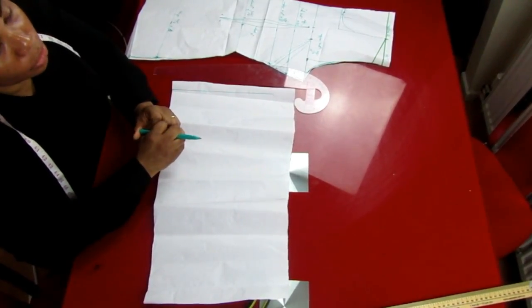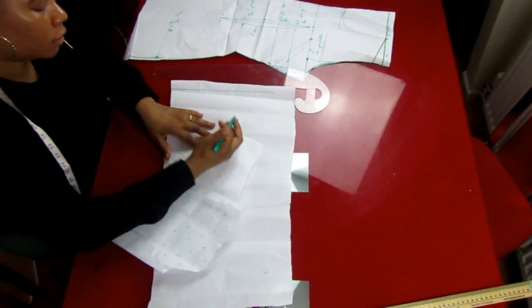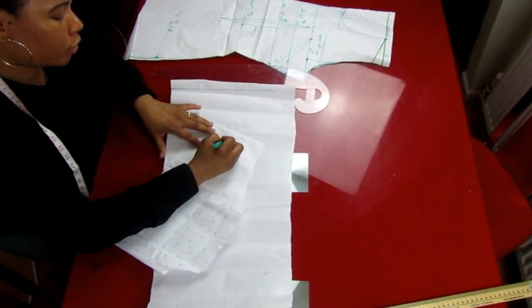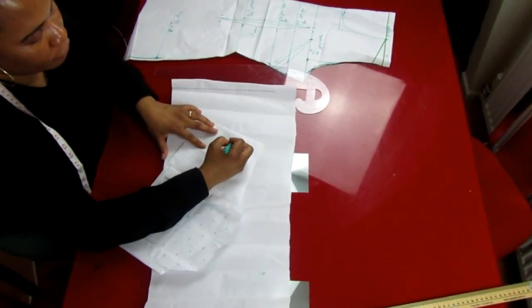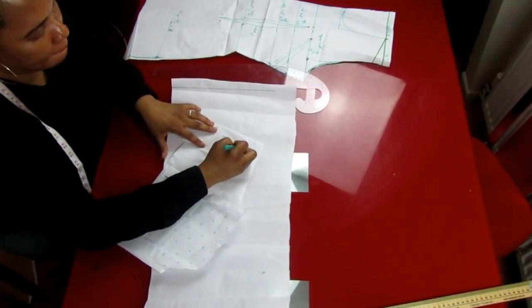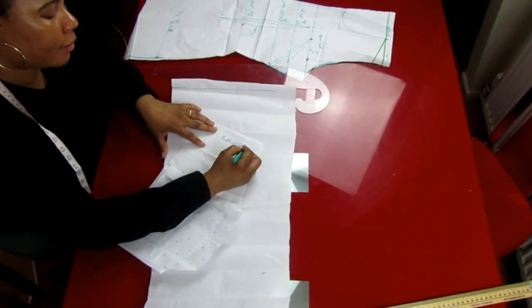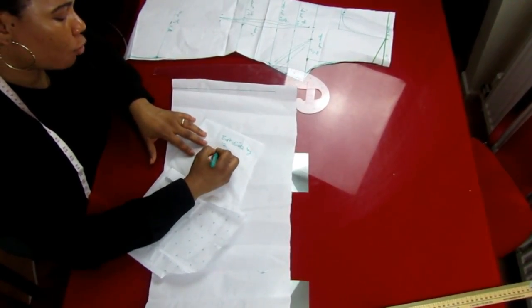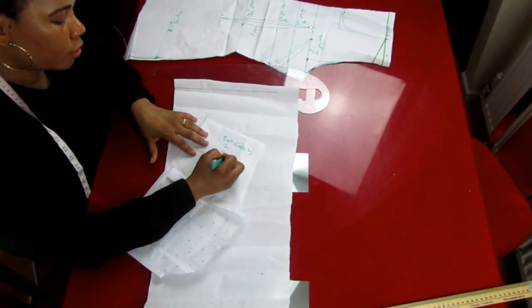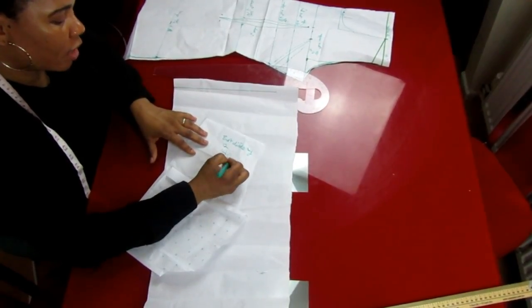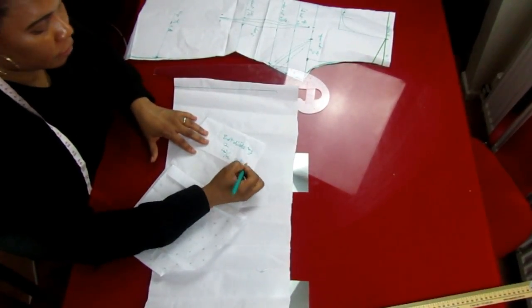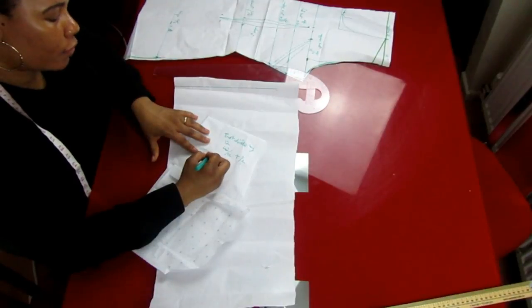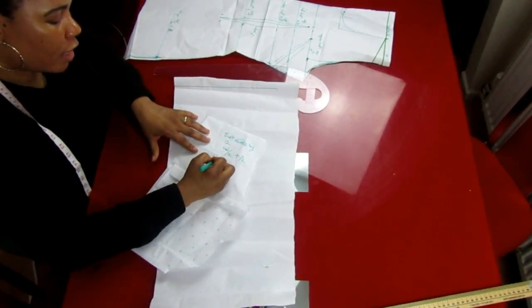So the bust I'm working with is 42 inches divided by 12, plus half an inch. So 42 divided by 12 is 3.5 inches, three and a half inches, then plus half inch—that is 4 inches.